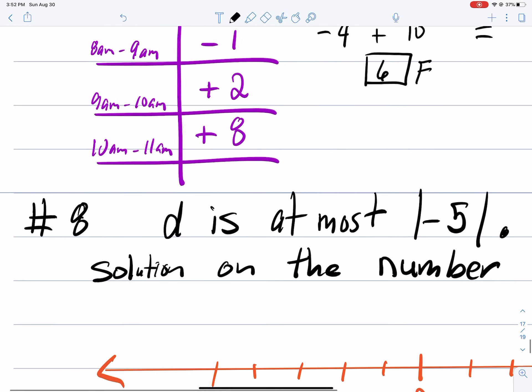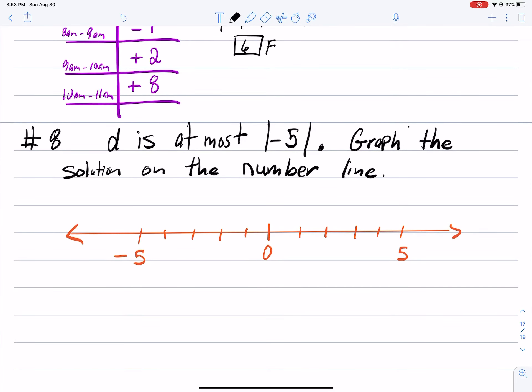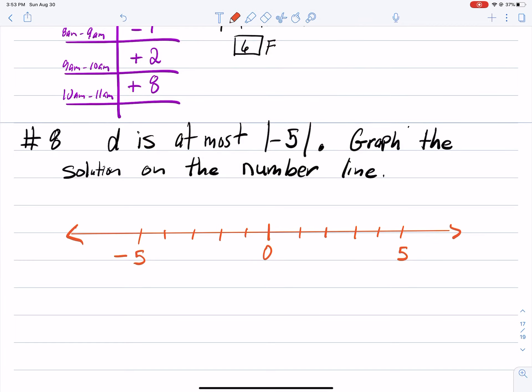And that's what goes in the box. The last question that we struggled with was one that maybe you've seen in a previous course, but it's to graph this solution on the number line. So it says D is at most negative absolute value of 5, so I want to share with you what that means. D is at most means D means less than or equal to.